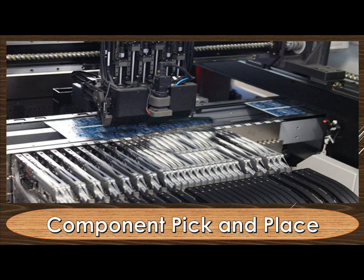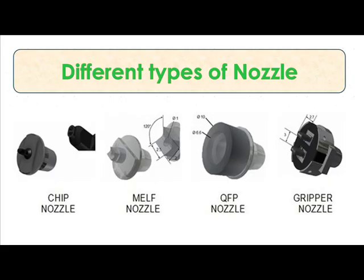Key aspects of the component placement process include PCB design data such as panel size, handling strips, fiducial marks, component size and position. Nozzle types include chip nozzle, MELF nozzle, QFP nozzle, gripper nozzle, and the vision system.